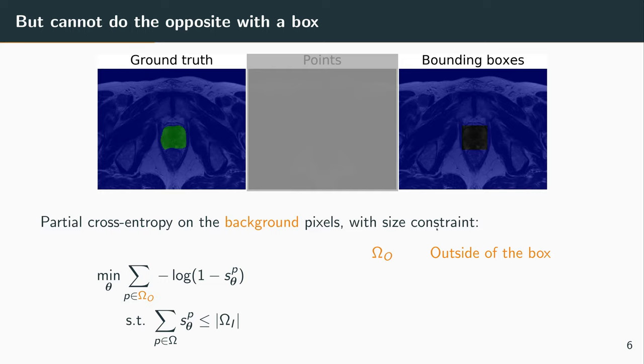now we'll introduce the omega O set to define the outside of the box, and omega I for the inside of the box. The background probability is simply 1 minus the softmax. We just inverse the predicted probability.